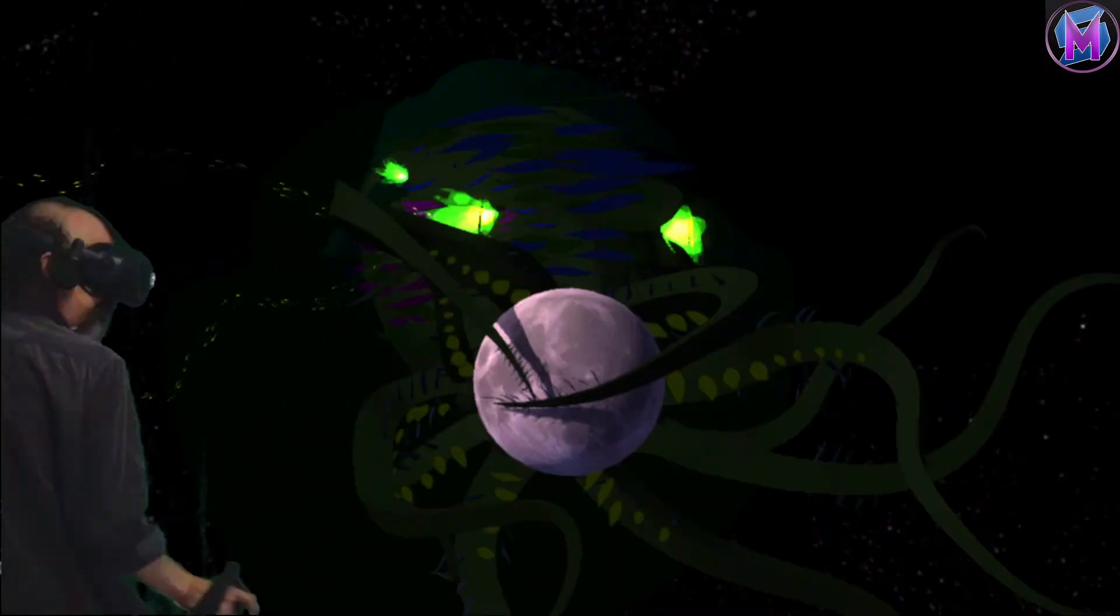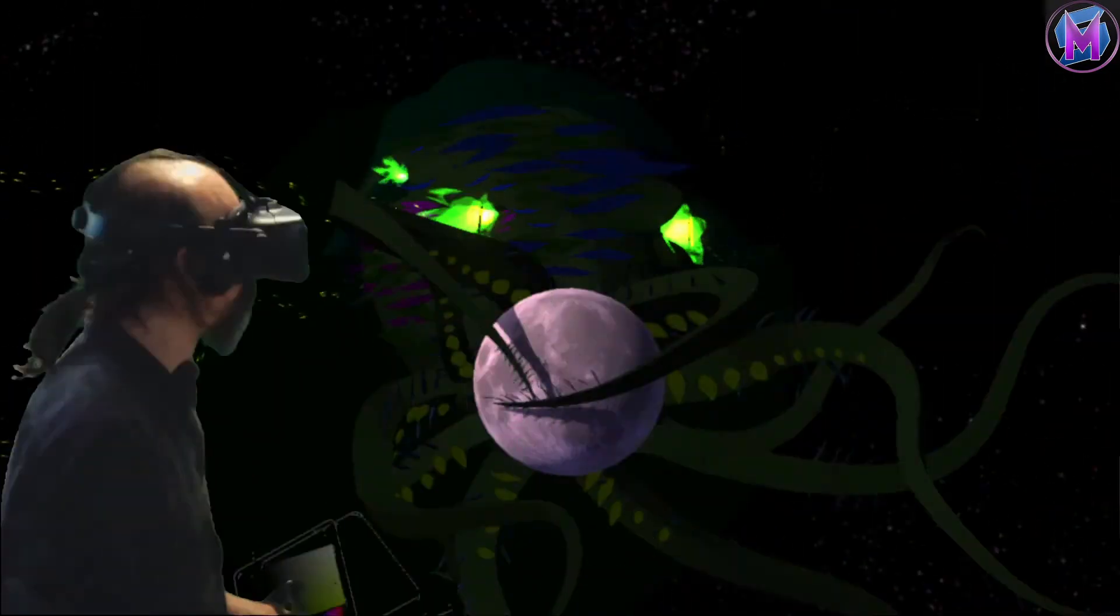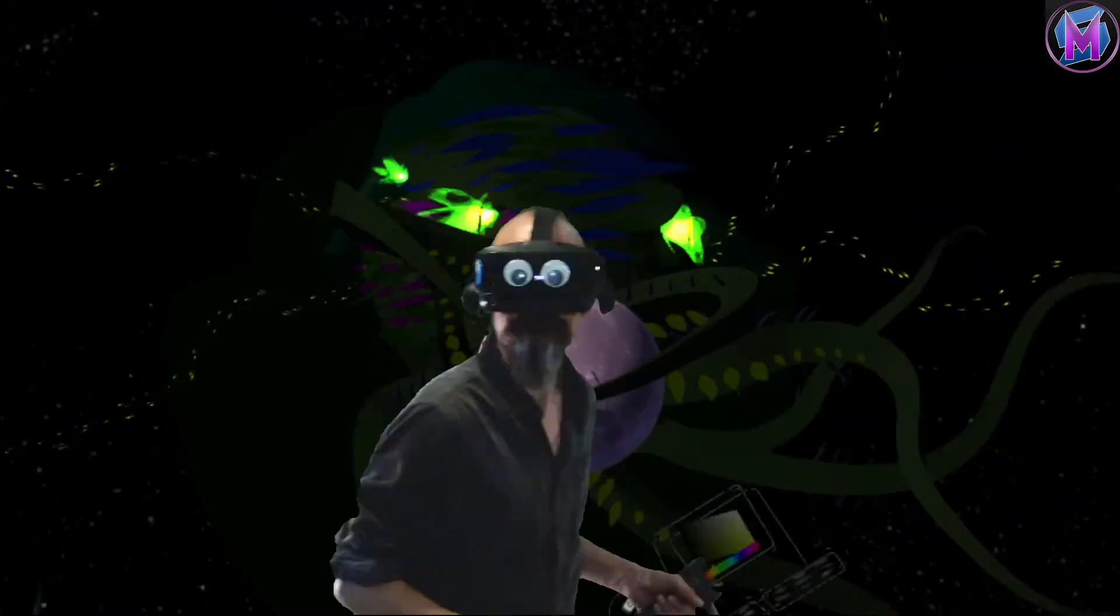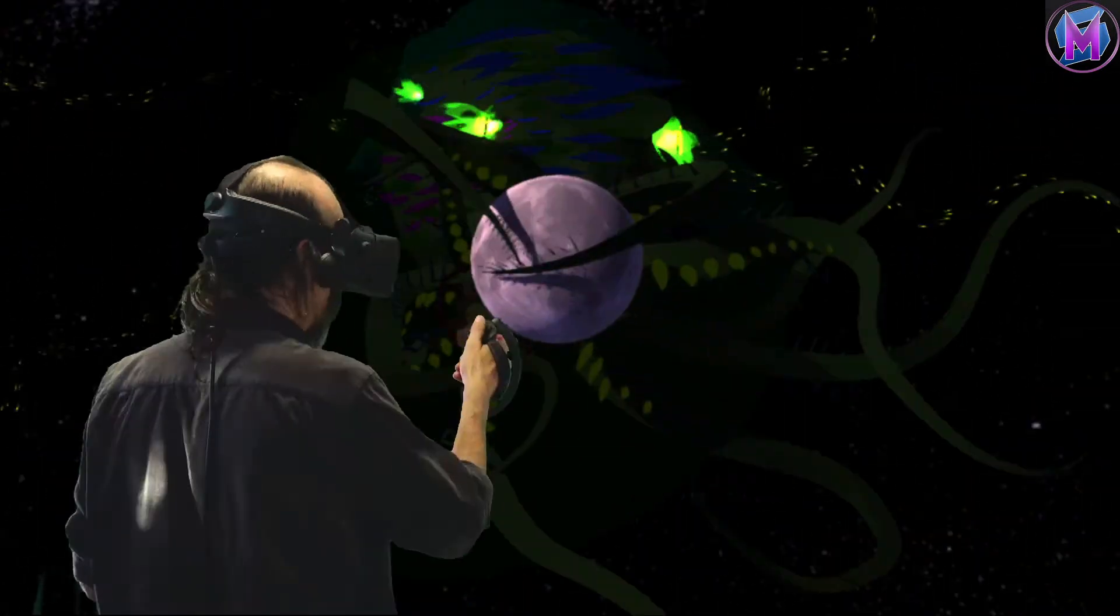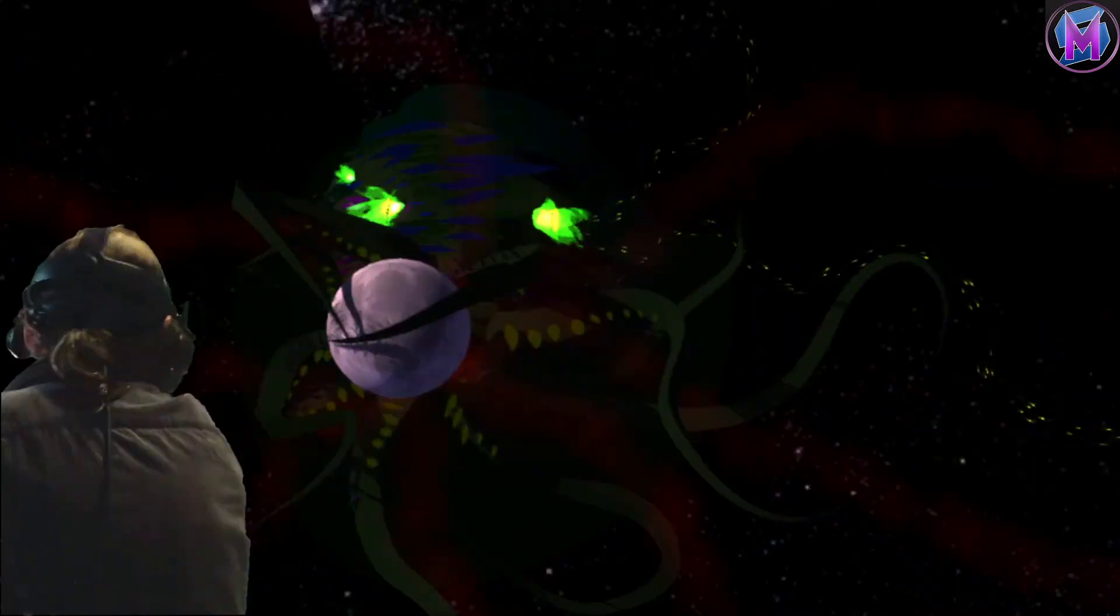And their habitation is even one with your guarded threshold. Yog-Sothoth is the key to the gate, whereby the spheres meet.